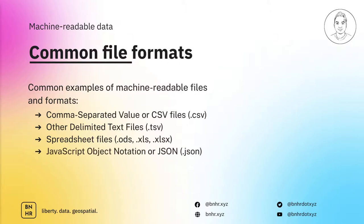JavaScript Object Notation or JSON is also considered machine readable even though it's not a tabular representation of data. Its known structure still makes it easy to work with data stored as a JSON. And lastly, we have data stored in databases, which will almost always be easy to extract, analyze, and present as long as you know the language to use.